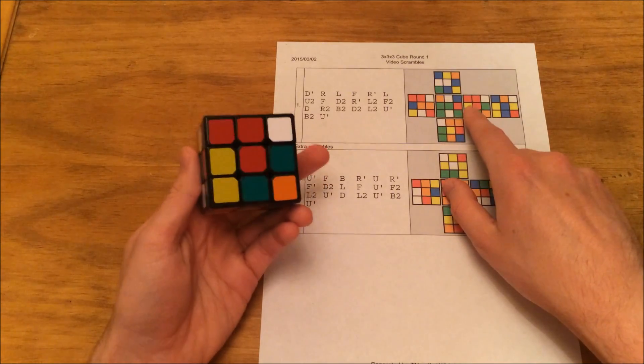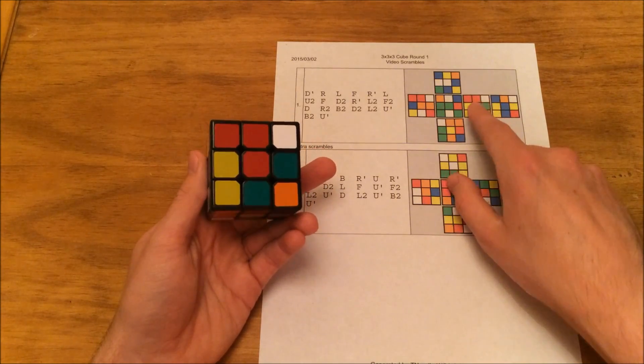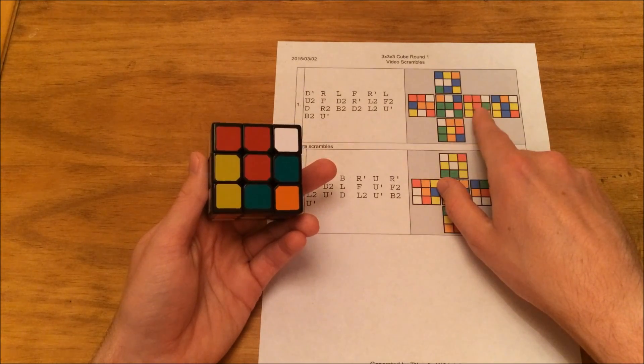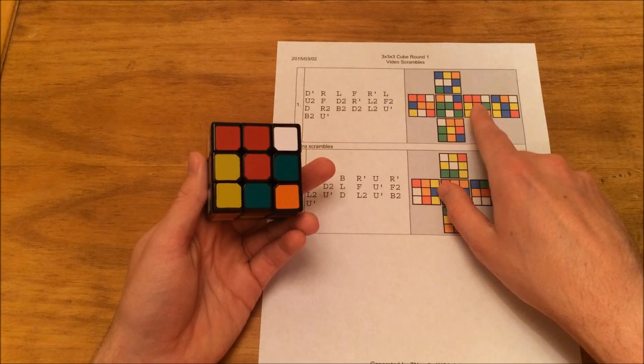And then if we go ahead and turn to the red face, we have red, red, white, yellow, red, green, yellow, green, orange.